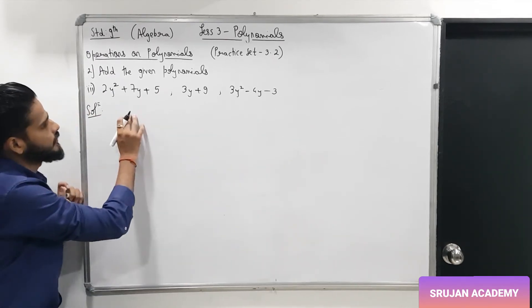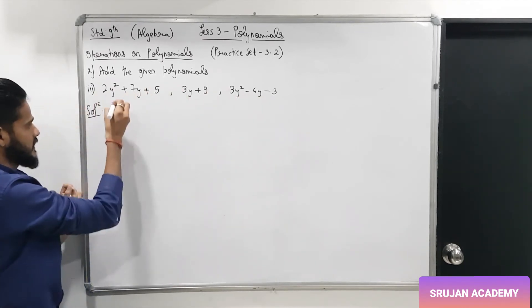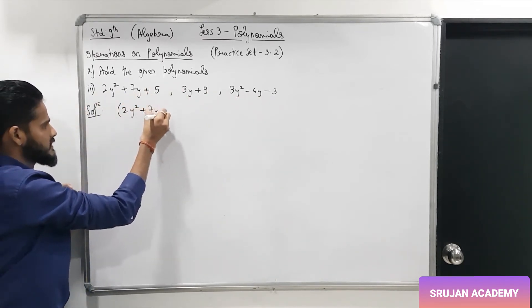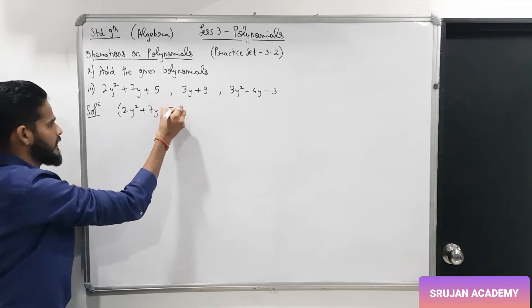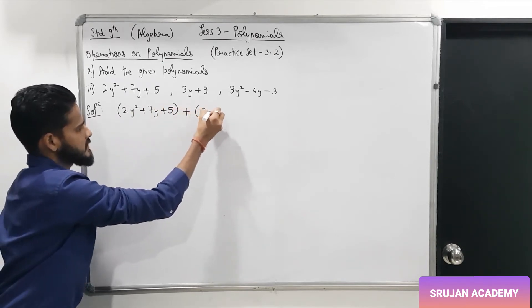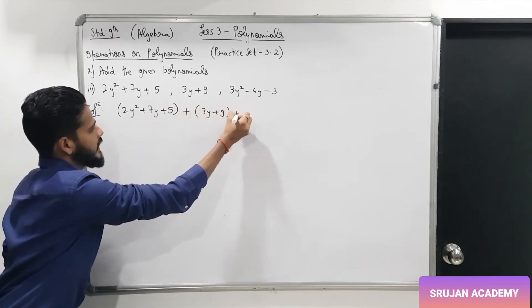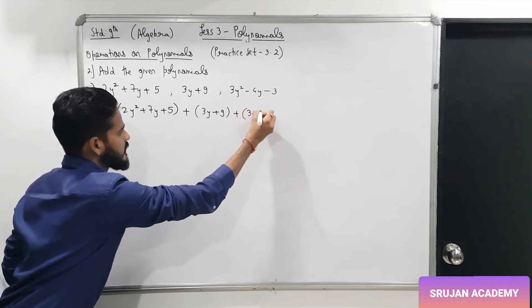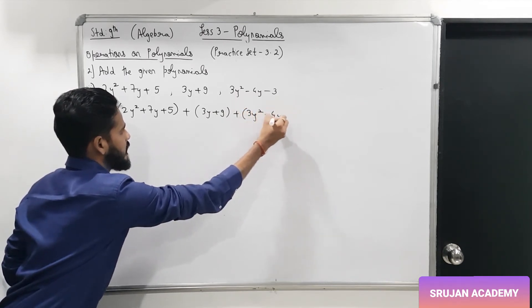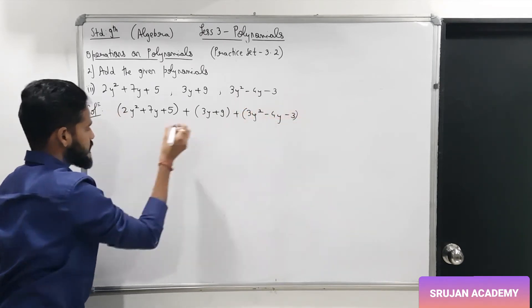Third sum: add three polynomials — (2m² + 7m + 5) + (3m + 9) + (3m² − 4m − 3). Opening brackets: 2m² + 7m + 5 + 3m + 9 + 3m² − 4m − 3.